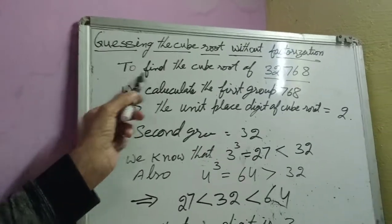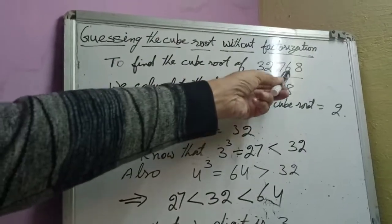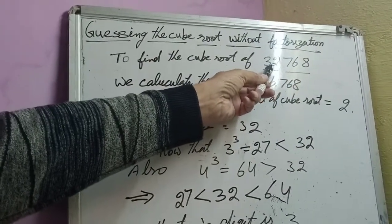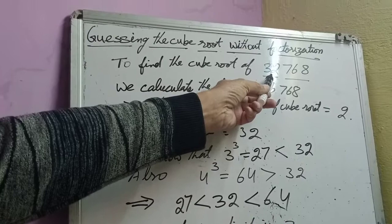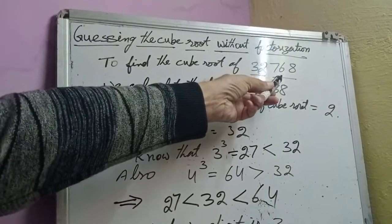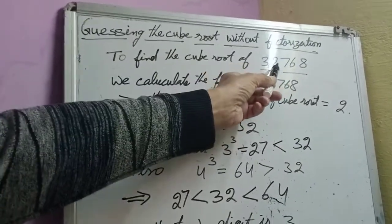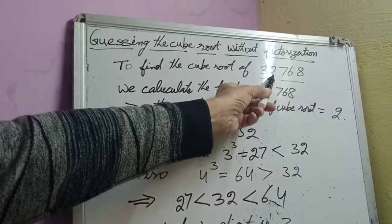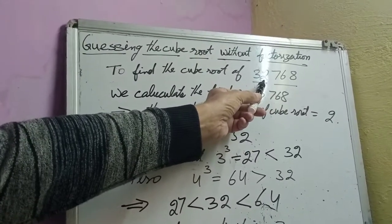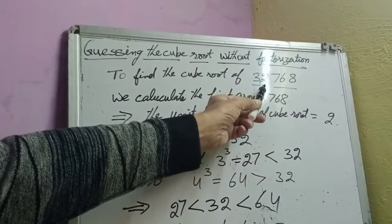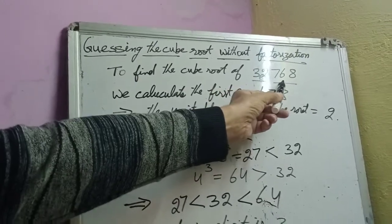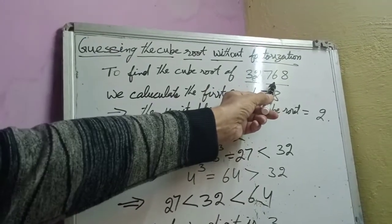Let's take a number. The number I have taken today is 32,768. To calculate the cube root without factorization, we have to divide it into two groups.